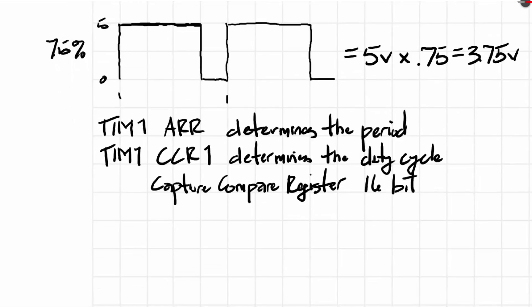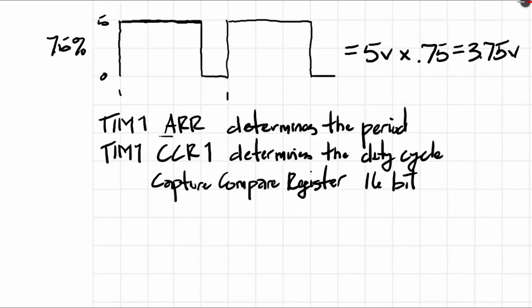You might be able to surmise that since the period is determined by the ARR register, that the period is also dependent on the counter. It's based on the counter, not the actual oscillator that's in the microcontroller. So you have a little bit more control and you can cause the period to be relatively long, because you can use a prescaler to increase the number of times the oscillator is skipped for every count.